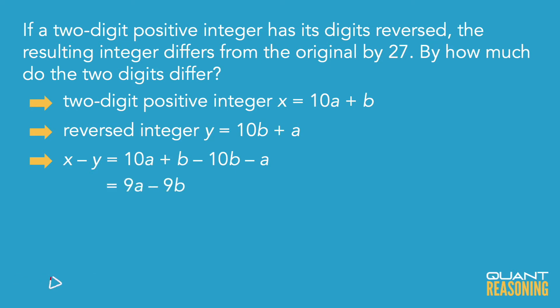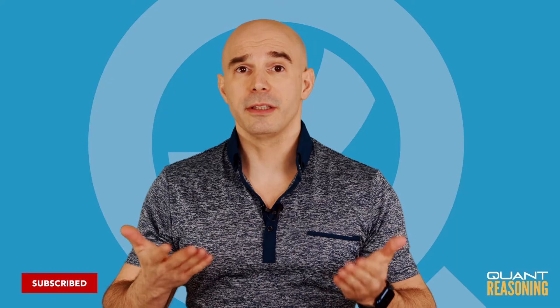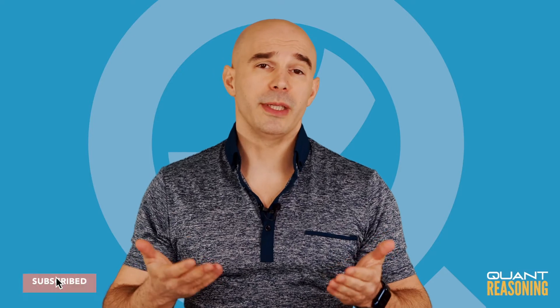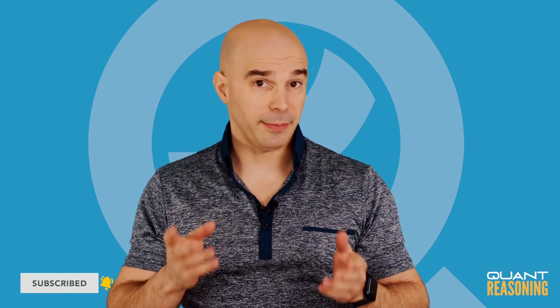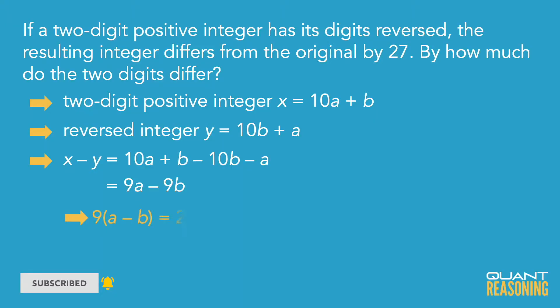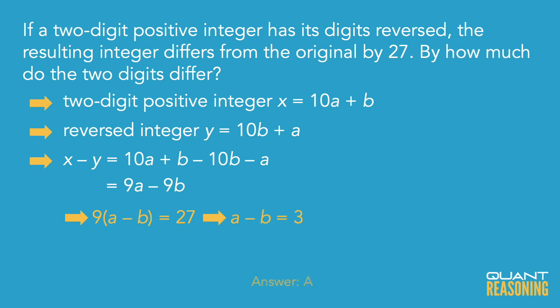Why am I talking about the difference? Because we were told that the difference between them is 27. So 9 times (A minus B) equals 27. That means that A minus B is 3, and that's answer choice A.